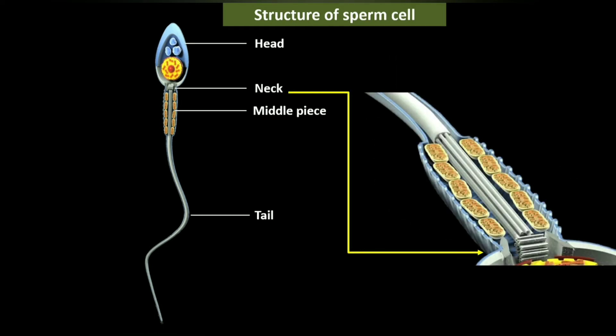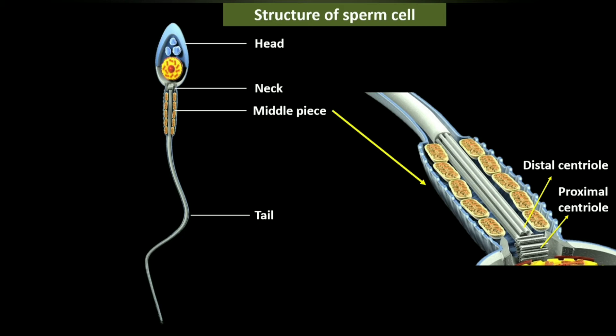Next is the neck region, also called the connecting piece. It contains two centrioles: the proximal centriole, which initiates division of the zygote, and the distal centriole, which gives rise to the axial tail.